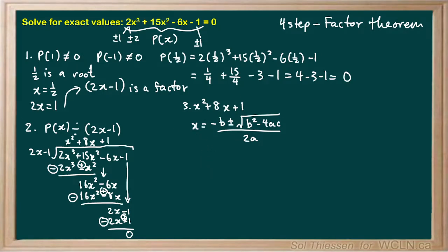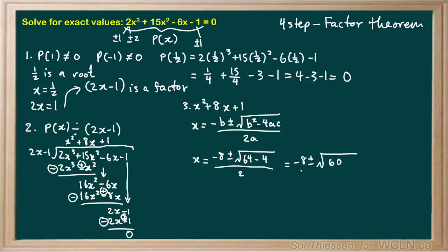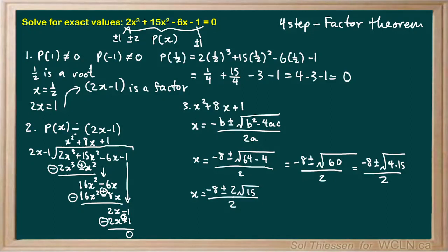Let's plug in our numbers. x equals negative b, so negative 8, plus or minus the square root of b² which is 8² or 64, minus 4 times a times c — a is 1, c is 1 — so minus 4, all over 2a, and a is 1 so this is just over 2. Simplifying: 64 minus 4 is 60, and we can factor that as 4 times 15, so the square root of 60 is the square root of 4 times the square root of 15, which is 2 times the square root of 15. So we have negative 8 plus or minus 2 times the square root of 15, all over 2. We can cancel a factor of 2.